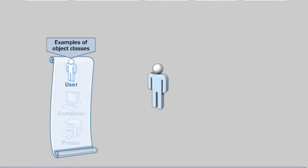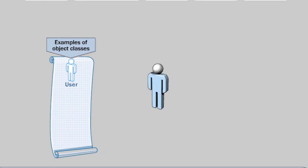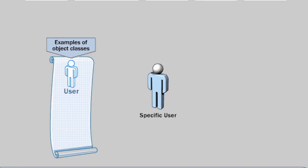Each object — for example, an object that represents a specific user — is based on an object class. To create a user object, you must have a user object class to use as a template. Object classes and attributes are collectively known as the Active Directory schema.